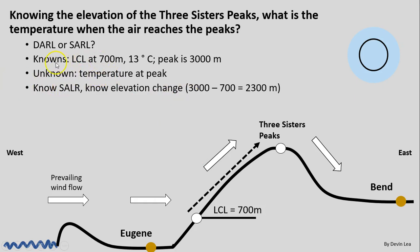Our knowns: lifting condensation level at 700 meters, 13°C, and the Three Sisters Peaks at 3,000 meters. The unknown is the temperature at the peak. We use the saturated adiabatic lapse rate because our air will be saturated as it continues going up. The elevation change is 3,000 minus 700 = 2,300 meters. Using 0.65°C per 100 meters, we cross-multiply: 100x = 2,300 × 0.65 = 1,495, so x = 14.95°C, approximately 15°C change in temperature.